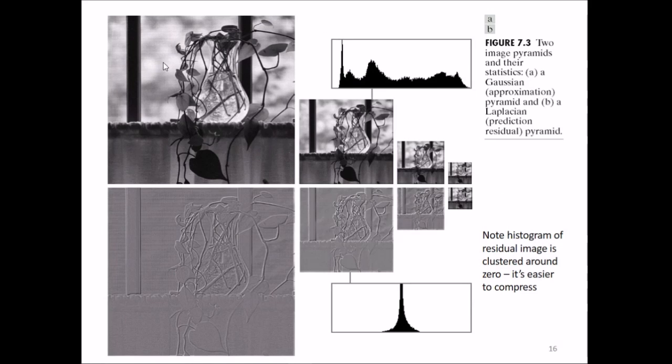This is an example of two image pyramids and their statistics. This is a Gaussian pyramid, and this is the Laplacian pyramid. The histogram of this particular image is spread all over, while the histogram of this image is very well concentrated. The histogram of residual images is clustered around zero, so it's easier to compress.